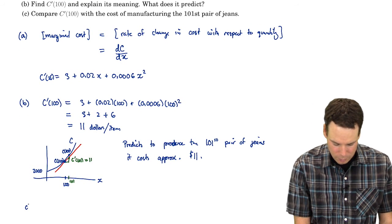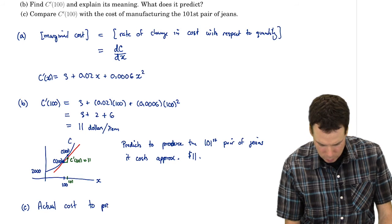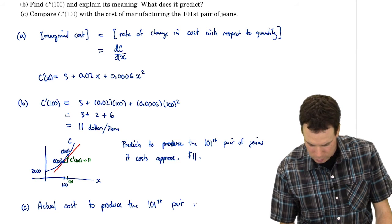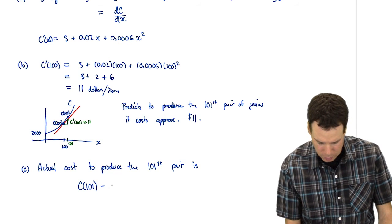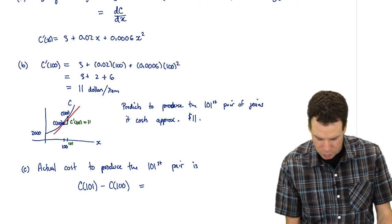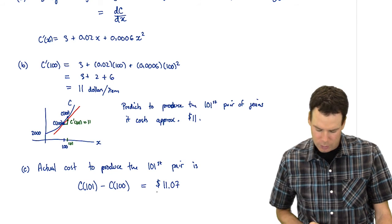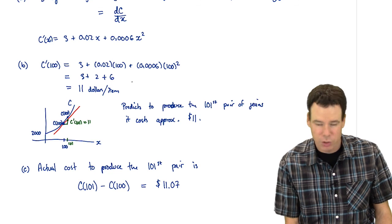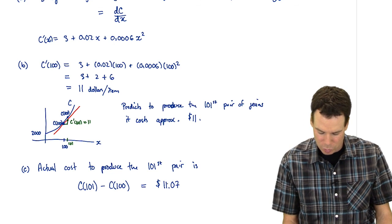Now we can compare that with the actual cost. The actual cost to produce the 101st pair of jeans is the cost to produce all 101 pairs minus the cost of producing the first 100 pairs. We can plug 101 and 100 into the cost function and take their difference. What we get is about $11.07. So our predicted cost from the marginal cost function was approximately $11.00, and you can see that the approximation is pretty close to the actual value.